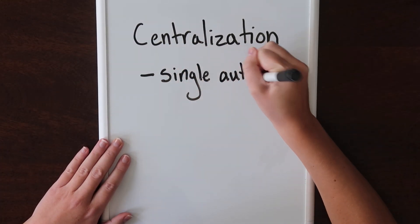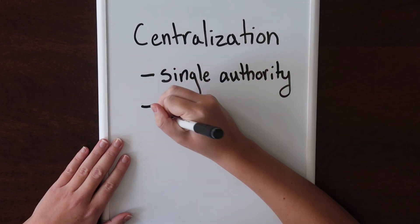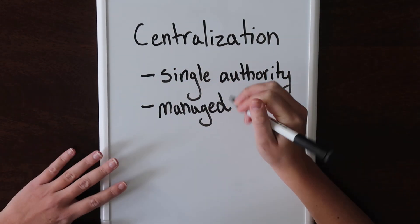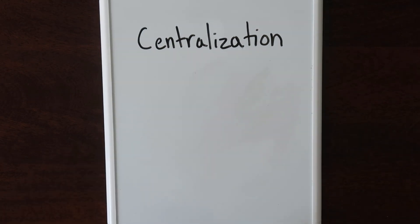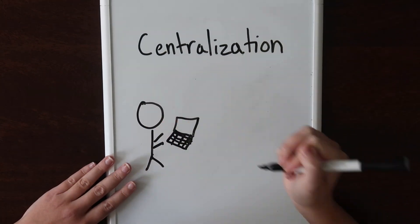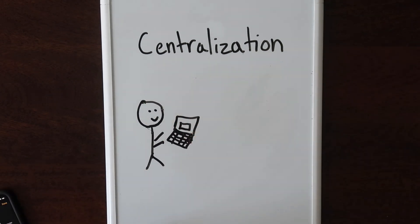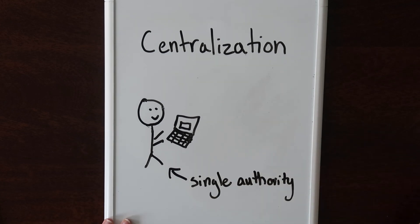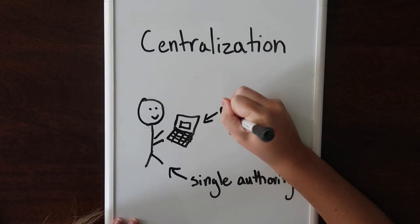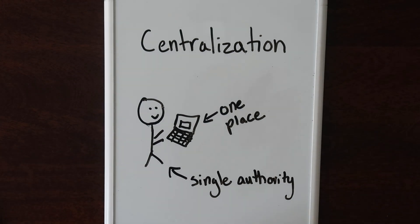Many of the systems we use today are centralized. When something is centralized, it means it's controlled by a single authority or managed in one place. For example, let's say you're working on an assignment on your computer. You own your computer and you only have the assignment stored on your computer. It's owned by you, a single authority, and it's managed in one place, your computer.